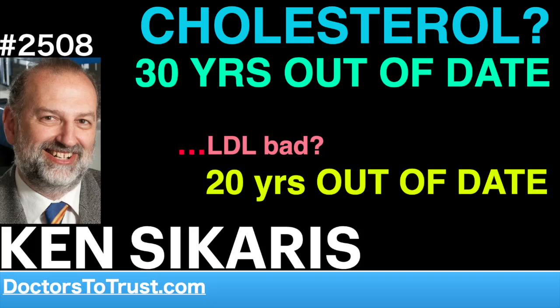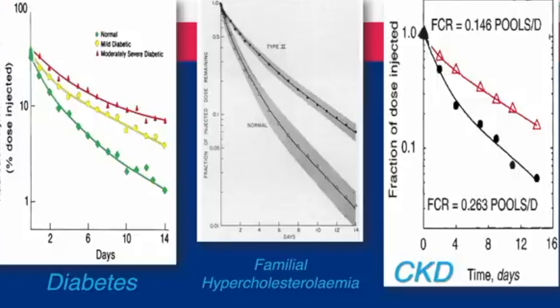These are some decay curves showing the difference in disappearance of LDL from the blood in diabetes. With severe diabetes, it takes even longer to disappear. If you're healthy, it disappears quickly. But if you've got inherited hypercholesterolemia where you've got no receptors, the LDL hangs around a long time in the blood and it becomes small and dense.